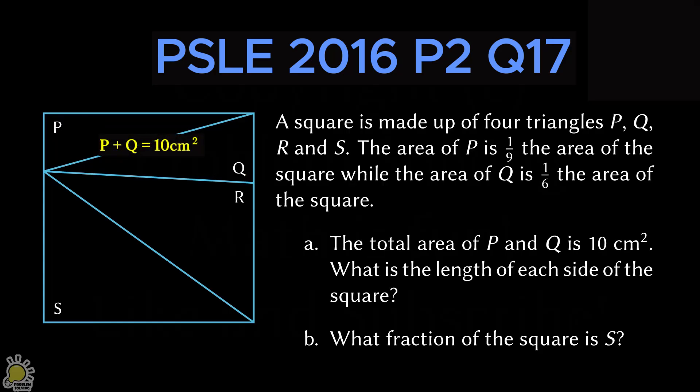The total area of P and Q is 10 centimeters squared. In Part A, we are asked what is the length of each side of the square. In Part B, we are asked what fraction of the square is S.